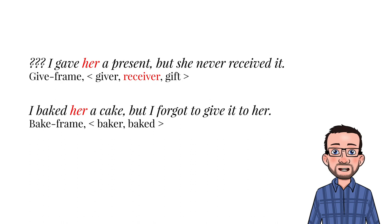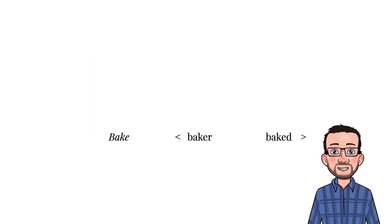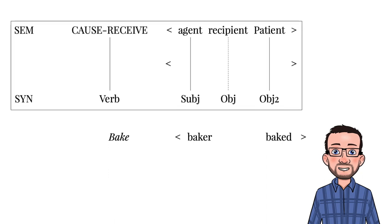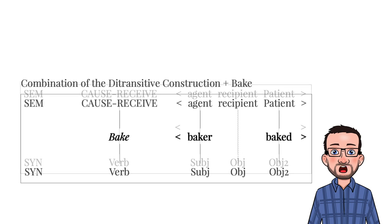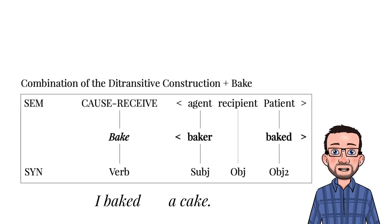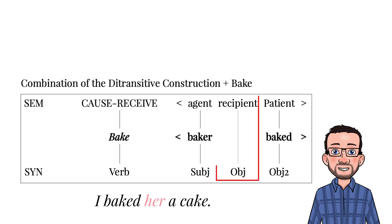So Goldberg argues that instead of having a lexical item for the verb bake that includes a third participant in its valency list — for which we have evidence that this is not true — it is more sensible to say that some parts of the meaning are contributed by the verb, and other parts are contributed by grammatical constructions. The ditransitive construction expresses the abstract relation between an agent, a patient, and a recipient. If we now combine the verb to bake with this construction, the verb may already contribute two typical participants — a baker and the food that was baked — which we can construe as instantiations of the agent and the patient of the action. What is unique about construction grammar is that the grammatical construction can now contribute additional meaning: the intended recipient. In other words, the verb's lexical semantics does not have to be an exact match with the semantics of the grammatical construction. They only need to be compatible.